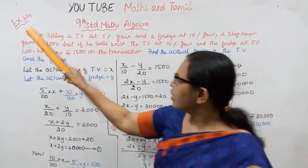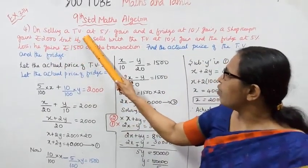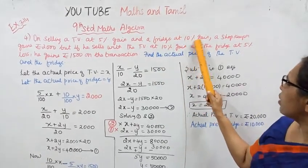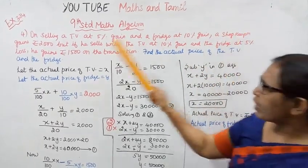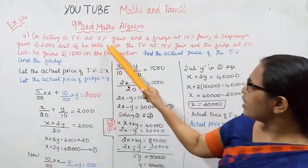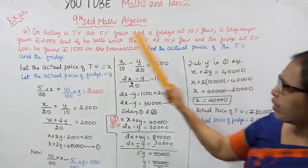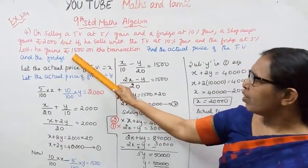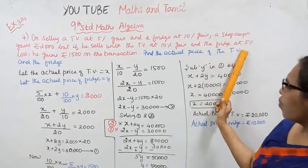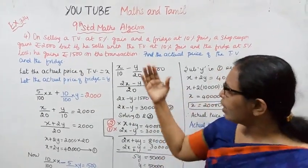9th Standard Max Algebra Exercise 3.14, 4th Sum. On selling a TV at 5% gain and a fridge at 10% gain, a shopkeeper gains Rs. 2000. But if he sells the TV at 10% gain and the fridge at 5% loss, he gains Rs. 1500 on the transaction. Find the actual price of the TV and the fridge.